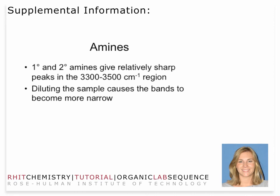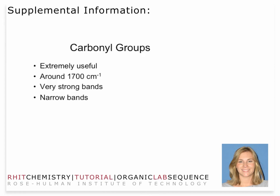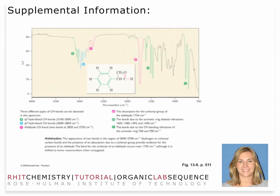Amines are not something we're going to be working with this quarter in lab, but they do have relatively sharp peaks — that's the NH stretch. The number of NH bonds corresponds to the number of NH peaks, which is a nice correlation. Probably the most useful group is the carbonyl group. You'll see carbonyl stretch signatures around 1700 wave numbers. They're very strong, very narrow, and very distinctive. The sharp, strong singlet around 1700 shown at label D is your carbonyl stretching peak — a very useful signature.